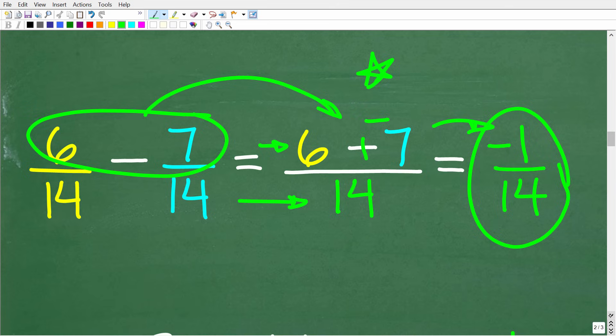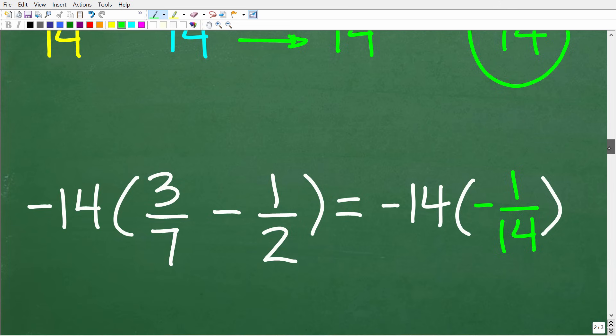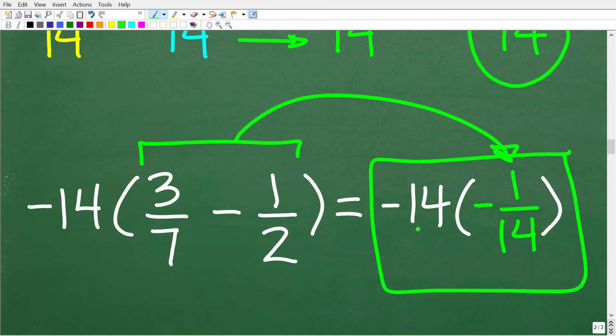Okay, this is going to be the numerator here. We're going to subtract these numbers in the numerator over our common denominator. But here you have to be very careful because we are dealing with positive and negative numbers. So 6 minus 7 is the same thing as 6 plus a negative 7, which is negative 1. So our answer here is negative 1 over 14.